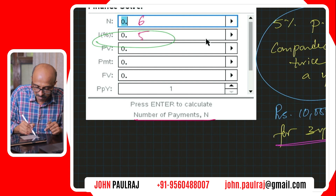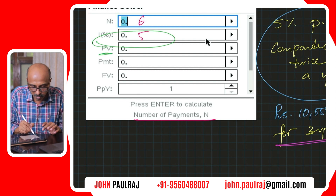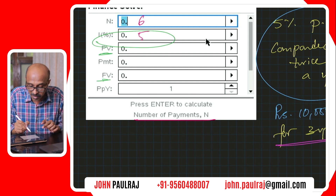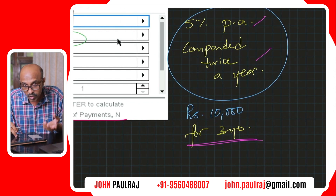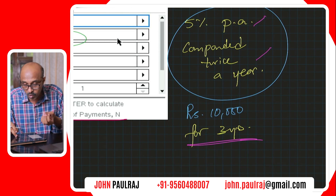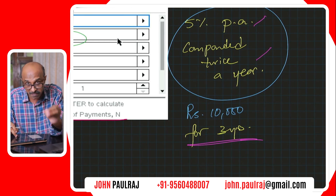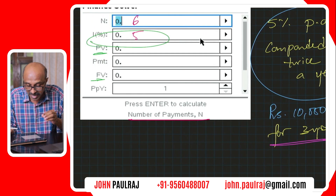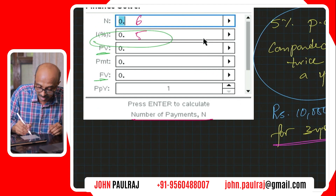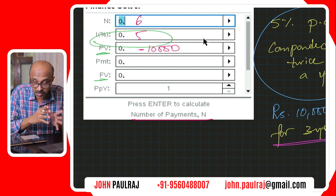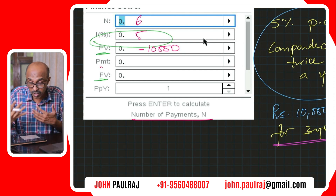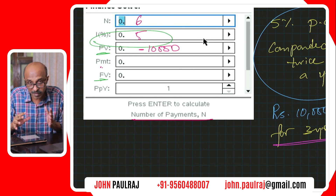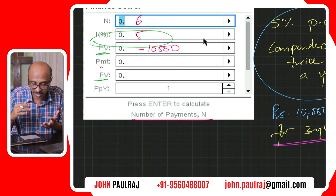The next entry is present value. The present value, as opposed to the future value, is what we have called the principal. Now whenever the money leaves you — that means you are paying or you are giving, like in this case you are making that investment and you're going to give it to the bank — it needs to be reported as a negative value. So this has to be written as negative 10,000. The next field is payment. There are no other payments that you're making.